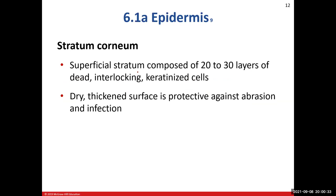The stratum corneum is the outermost superficial layer — this is what we see when we look at each other. This layer is thicker, about 20 to 30 cell layers. Unfortunately they're all dead because keratin killed them. But they're nice and tight and locked into one another because they established those relationships in the stratum spinosum. They're tough because the keratin strengthened them, so we describe this layer as dry and thickened. Those qualities help to protect underlying layers from infection, damage, and mechanical stress.